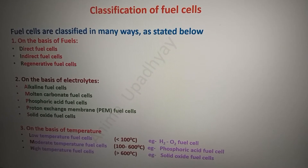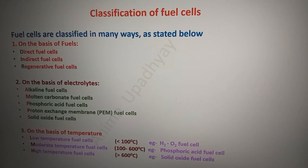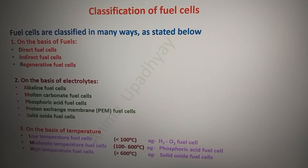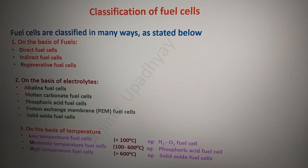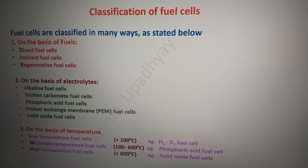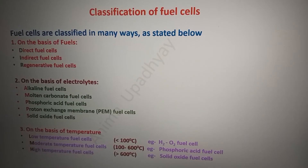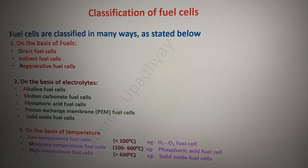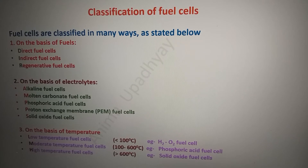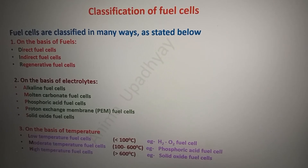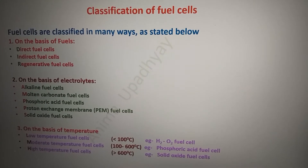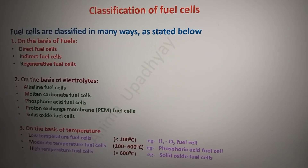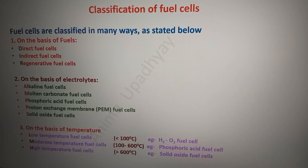Direct fuel cells are those where the fuel — hydrogen or methanol — is supplied directly at the anode. Indirect fuel cells are those where hydrogen is first generated from organic materials or from renewable sources, stored, and then directed to the anode. Regenerative fuel cells are those where spent reactants are used to regenerate hydrogen.